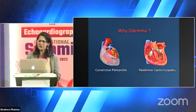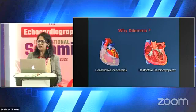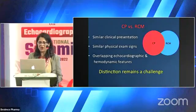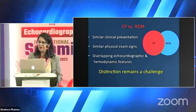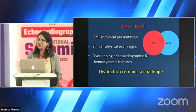Why should we have a dilemma between constrictive pericarditis, which is a disease of the pericardium, and restrictive cardiomyopathy, which is a disease of the myocardium? We do, because they have similar clinical presentation, similar physical examination signs, and most importantly, overlapping echocardiographic and hemodynamic features. So distinction remains a challenge.